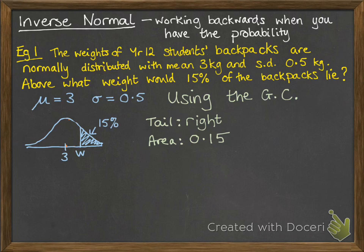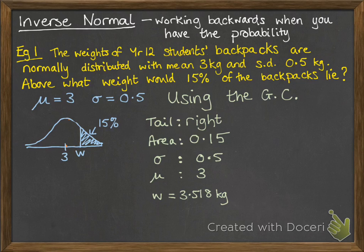You have to enter the area as a decimal. Then enter mu and sigma from our question: sigma is 0.5 and mu is 3. Press enter and you get your answer off the calculator — the x value, the w we were looking for, is 3.518 kilos.